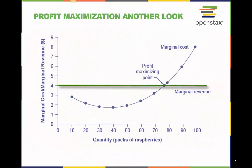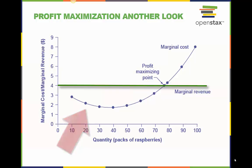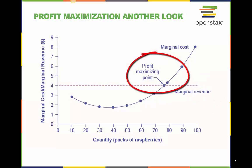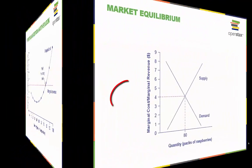It is also important to note that the marginal revenue is equal to the price for firms operating in a purely competitive market. For a perfectly competitive firm, the marginal revenue curve is a horizontal straight line because it is equal to the price of the good, which is determined by the market. The marginal cost curve is sometimes first downward sloping if there is a region of increasing marginal returns at low levels of output, but it is eventually upward sloping at higher levels of output as diminishing marginal returns kick in.